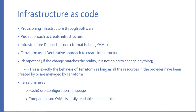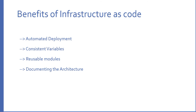Next are the benefits of infrastructure as code. First is automated deployment — let's say you have a task of creating a load balancer, auto-scaling group, instances, security groups, and everything. Every time you create it in an automated way: just run the code and create everything, whenever you need it. Also, we can use consistent variables across your code and reusable modules.